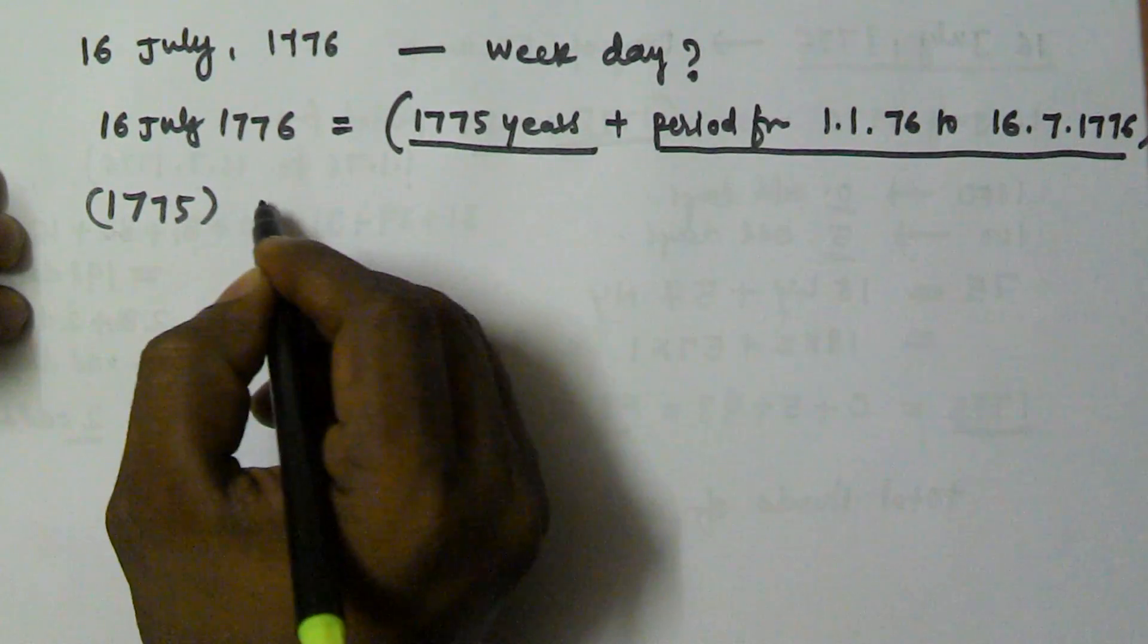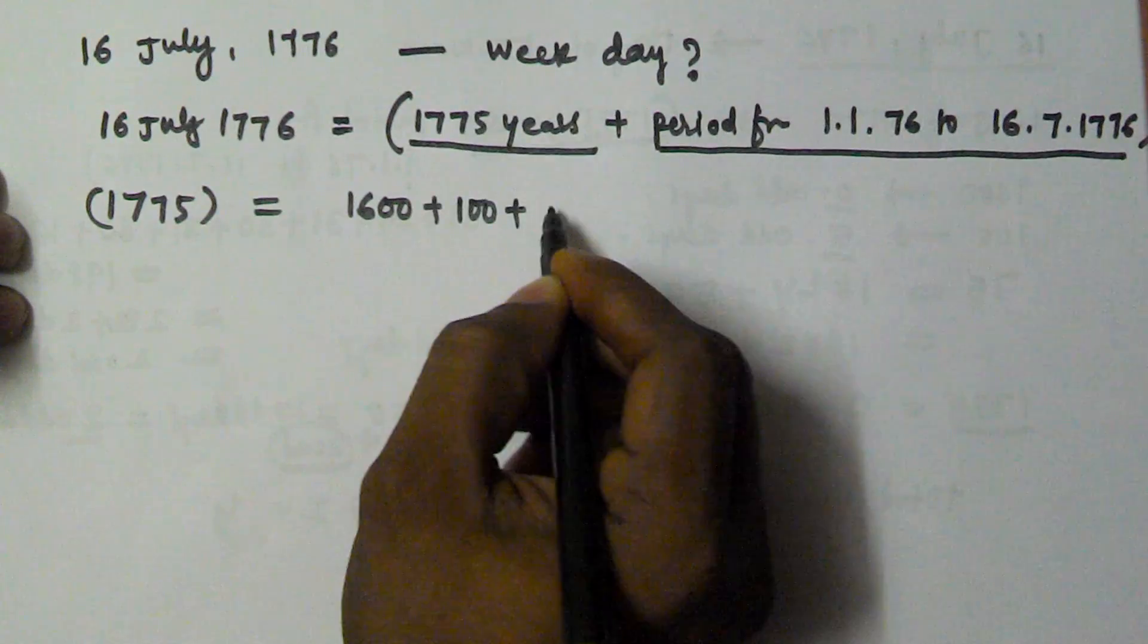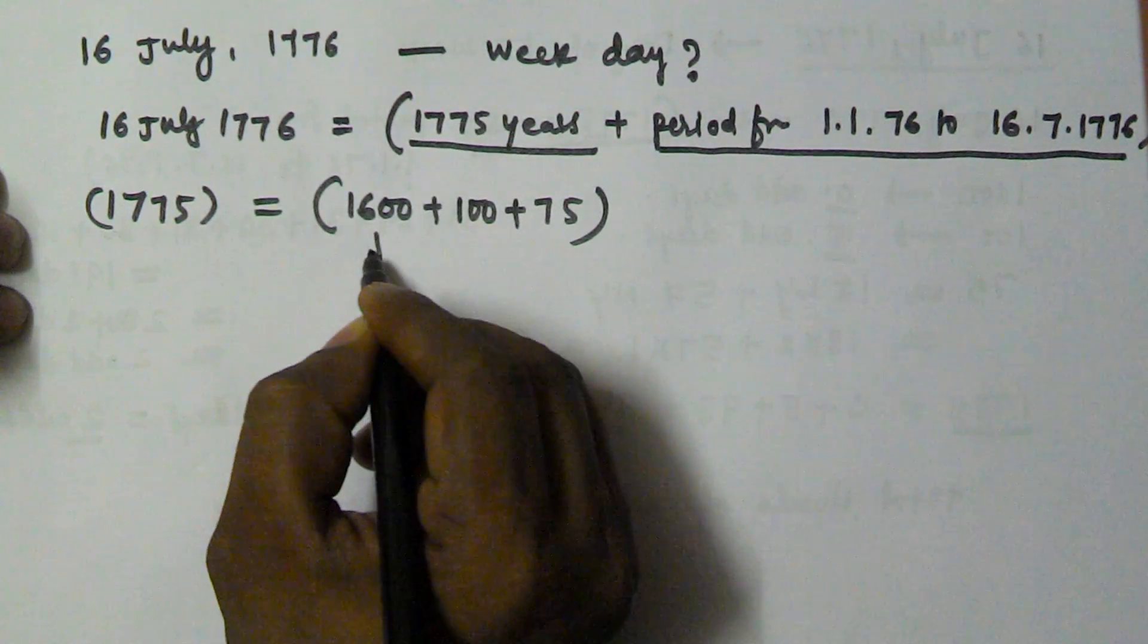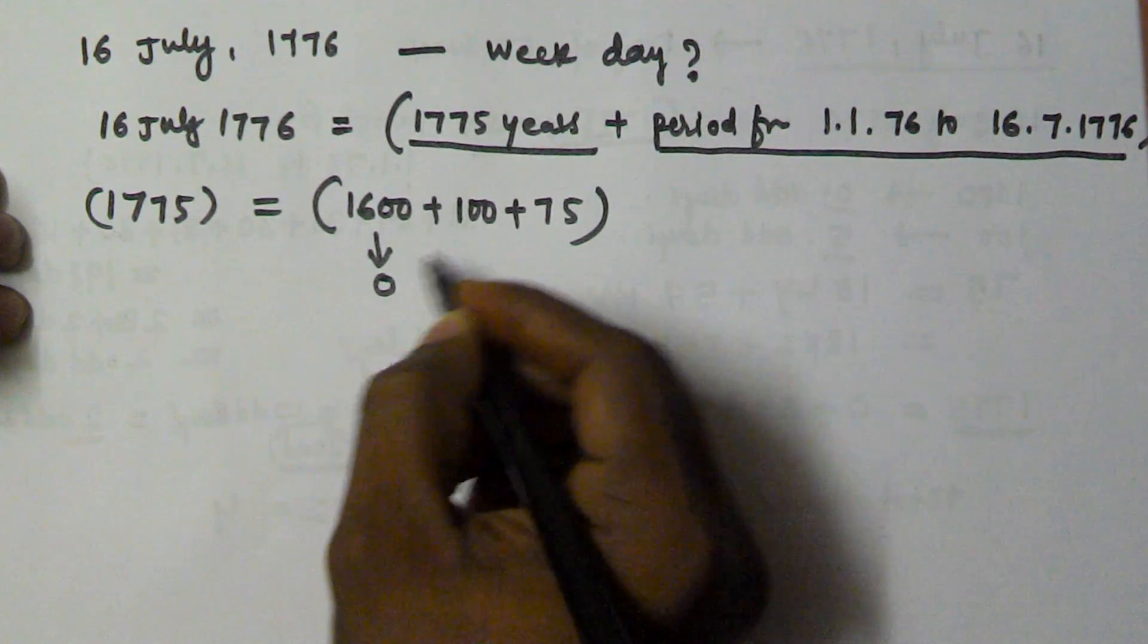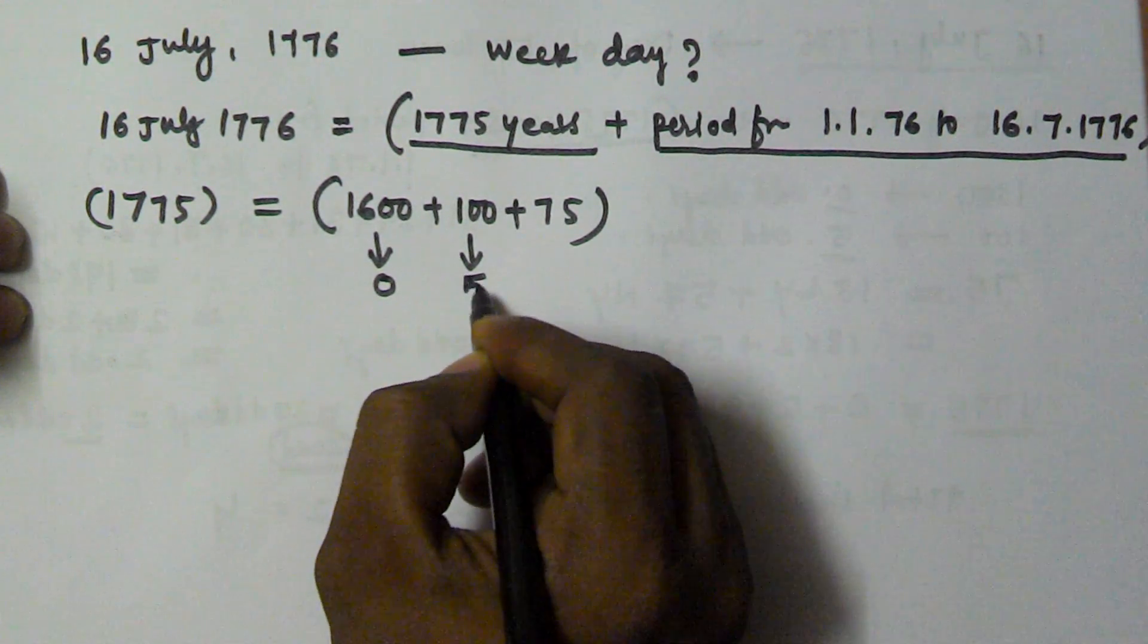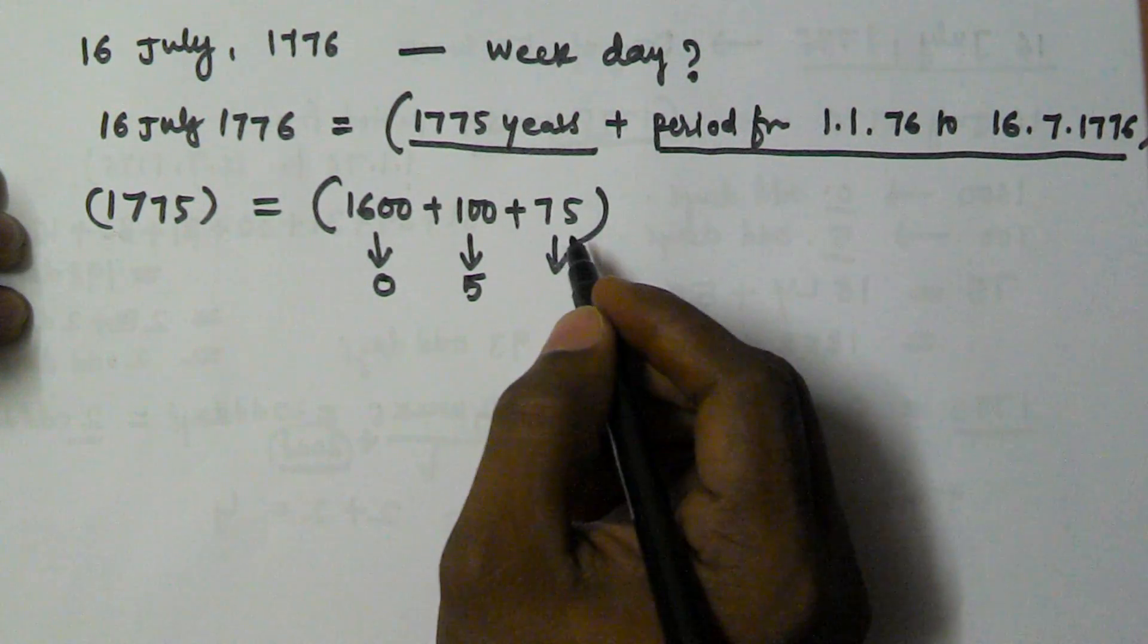1775 can also be divided by 1600 plus 100 plus 75. We already know that 1600 contains 0 odd days and 100 years contains 5 odd days. Now let's find the number of odd days in 75 years.